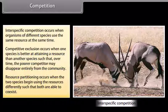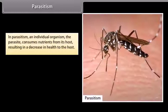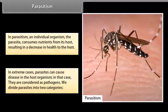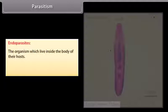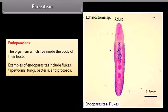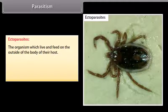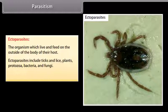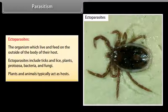Parasitism: In parasitism, an individual organism — the parasite — consumes nutrients from its host, resulting in a decrease in health to the host. In extreme cases, parasites can cause disease in the host organism, in which case they are considered pathogens. Parasites are divided into two categories: endoparasites — organisms which live inside the body of their hosts (examples include flukes, tapeworms, fungi, bacteria, and protozoa); and ectoparasites — organisms which live and feed on the outside of the body of their host (examples include ticks, lice, protozoa, bacteria, and fungi). Plants and animals typically act as hosts.